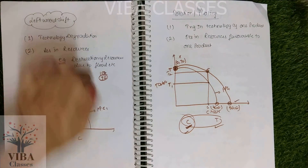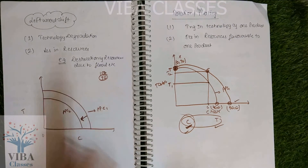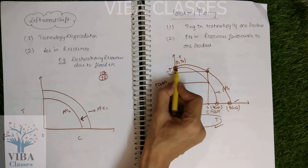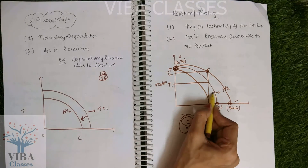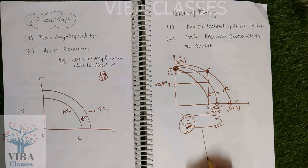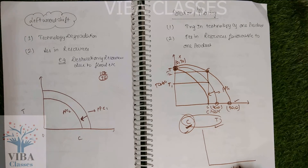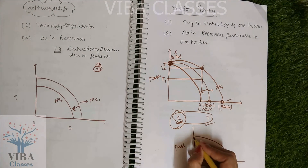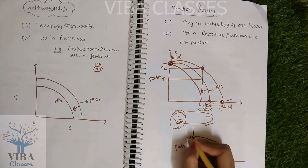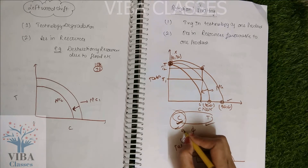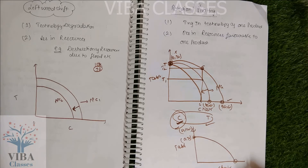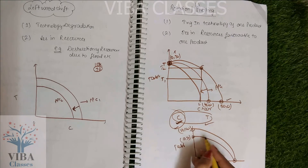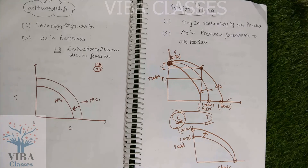Similarly, if we talk about technology favorable to the table — not the chair — then if you just make chairs, because the favorable technology is for tables, there is no difference in chair production — same combination. So you have an inverse rotation from the table side. If technology favorable to tables becomes outdated, you would rotate inward on the table axis. So in these situations the PPC rotates rather than shifts.